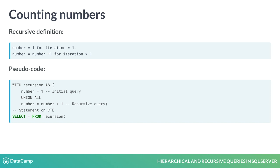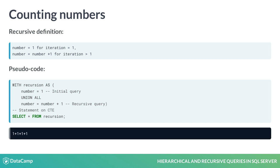The pseudocode looks as follows. You have to define the initial query and the recursive query according to the definition of the recursive function. This can be demonstrated through an example — you simply add 1 each iteration. For 4 iterations, this leads to 1 plus 1 plus 1 plus 1, with a final result of 4.